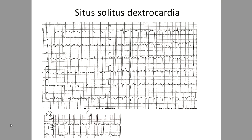An ECG example of situs solitus with dextrocardia shows P-waves positive in lead II and negative in aVR, whereas the QRS complex shows a small R and large S in V1, and the R-wave regresses toward V6. Taking right-side leads like V3R and V4R shows R-waves getting larger, confirming visceral situs solitus with cardiac mass to the right — dextrocardia. With dextrocardia, you expect complex congenital heart disease, and further ECG interpretation has limited utility.